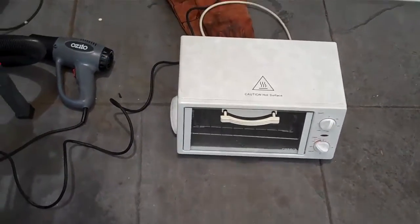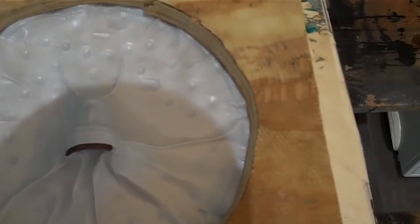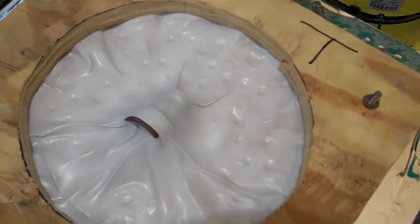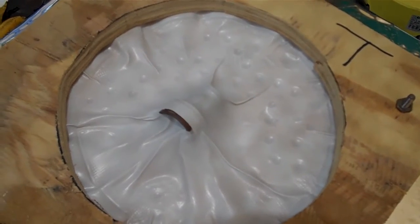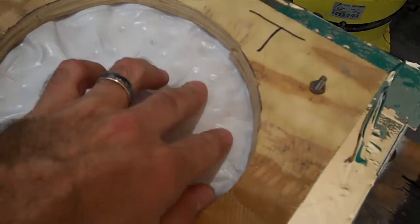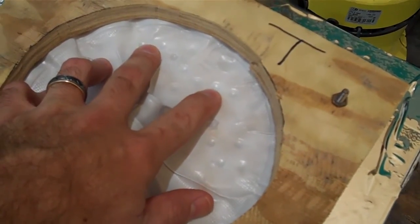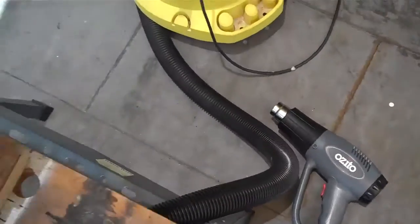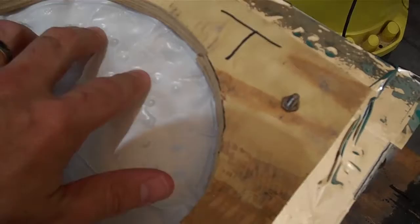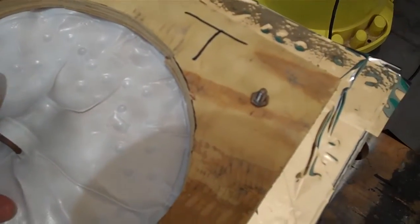But having said that though, when I put the thing down on top of here, this didn't happen. What I did was actually, I just grabbed my heat gun and gave it a hit with the heat gun and left the vacuum cleaner on, and it sucked it all down.